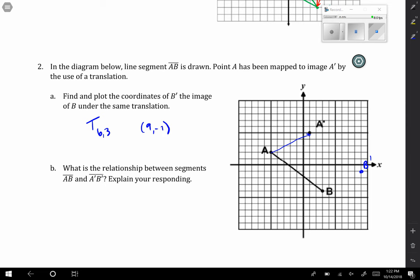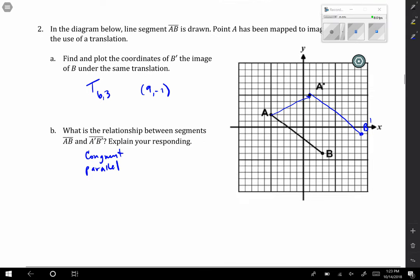It then says, what is the relationship between segments AB and A prime B prime? So if I draw in A prime B prime, notice they are congruent, right? Because rigid motions don't change the size of something. They are also parallel, because translation is this type of rigid motion that preserves parallelism. So if something is parallel, it's going to stay parallel. Those are two things we can say about those segments.